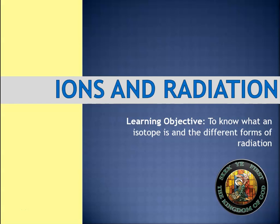Hi, Mr. Green here again with the third lesson in the physics topic Atoms and Radiation. This lesson is on ions and radiation, and our learning objective is to know what an isotope is and the different forms of radiation.